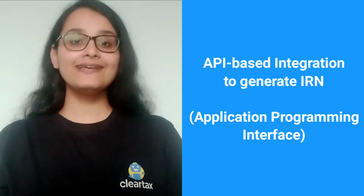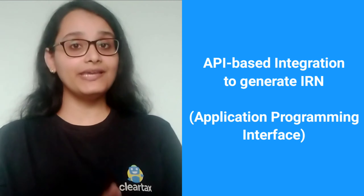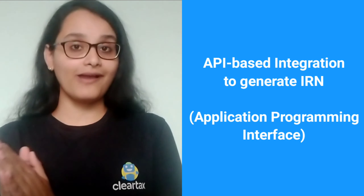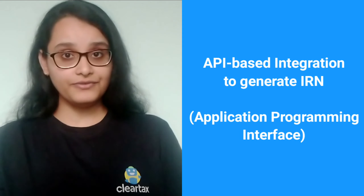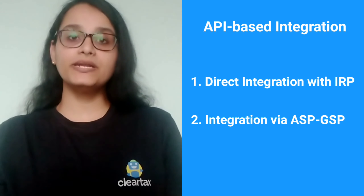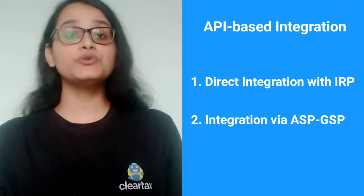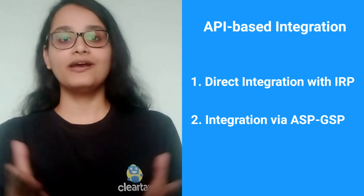In the last of the options, the government allows taxpayers to integrate their ERP systems with the invoice registration portal or IRP for seamless IRN generation, communicating using application programming interfaces or APIs. The process may take many weeks before being tested and implemented, and hence may not be suitable for many businesses, especially those who do not have a strong IT team or infrastructure. Hence, ASP-GSPs provide better affordable options for such ERP systems to connect with the IRP via APIs of the ASP-GSP. The ASP-GSPs provide the necessary tech support for such businesses to generate the invoice reference number on a real-time basis, as well as manage invoices easily.